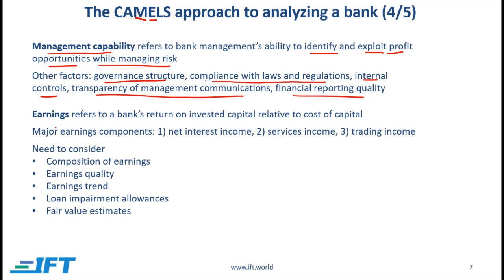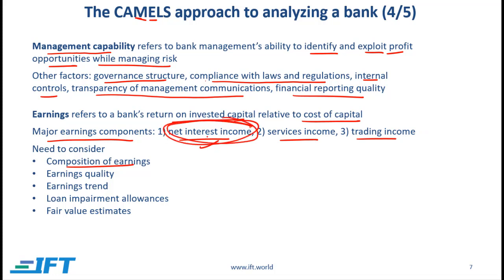The fourth component is earnings, referring to a bank's return on invested capital relative to its cost of capital — the higher the return, the better. Most banks have three major earnings components: net interest income, services income, and trading income. When evaluating earnings, we need to study their composition. Net interest income is typically the most stable component, so if most earnings come from there, that is a good sign. Trading income tends to be the most volatile, so if trading income is high relative to other components in a given year, that would be a cause for concern.